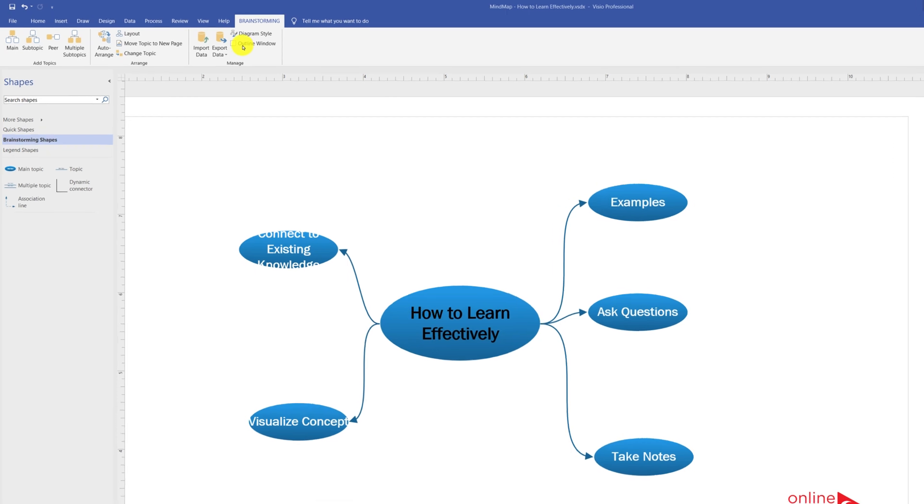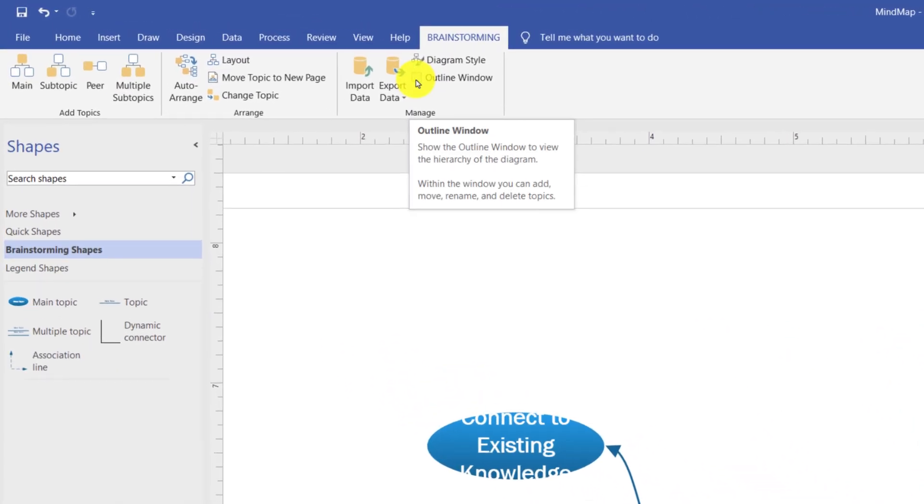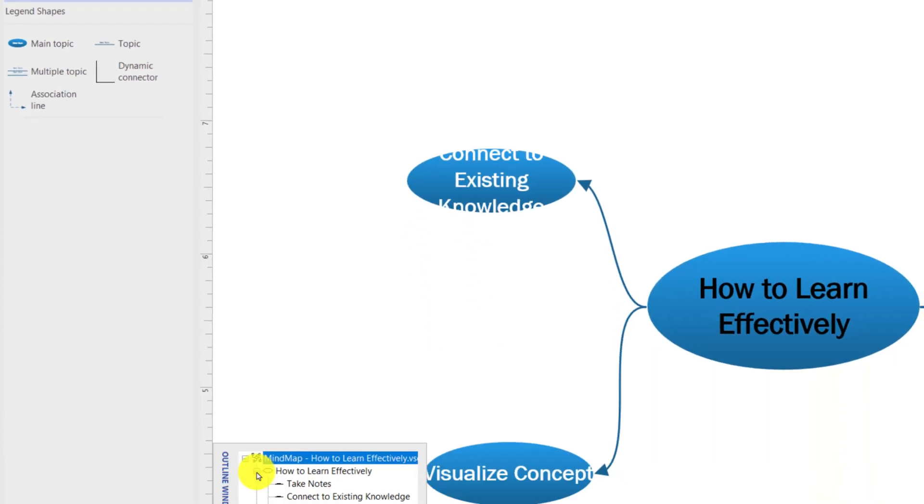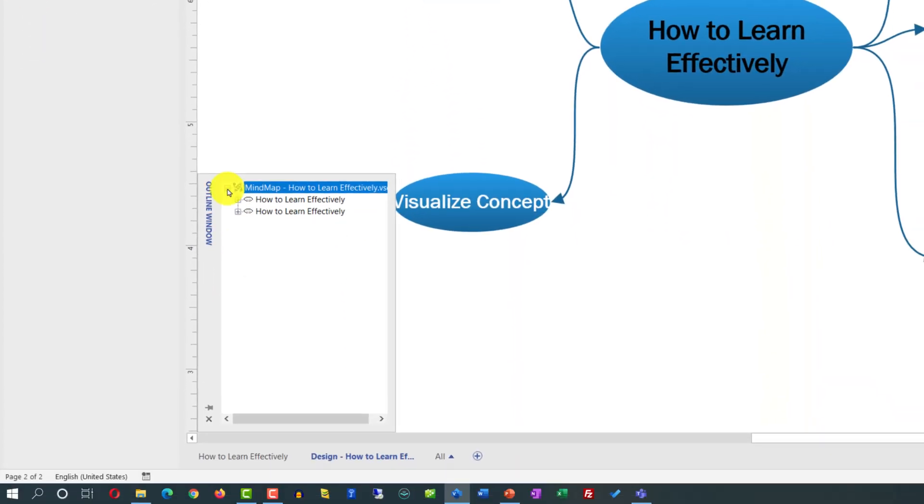One other cool option that I use a lot, outline window, you can enable it here or disable it here. In the outline window, you can see the entire structure of the diagram by just expanding and going through the tree.